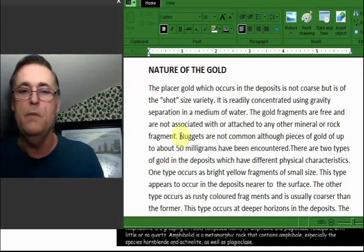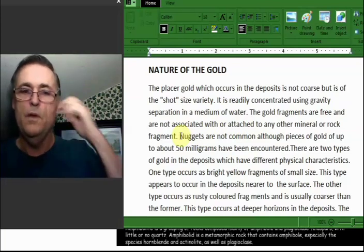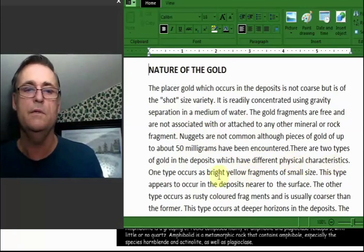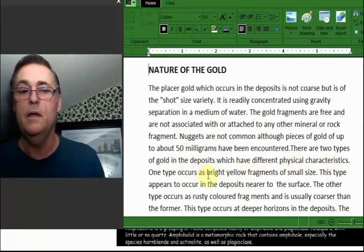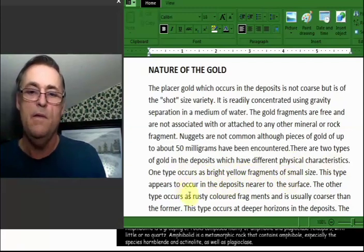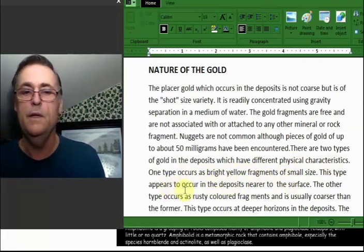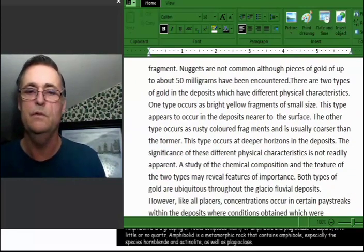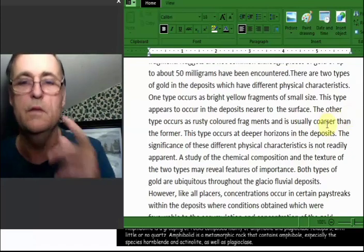Nuggets are not common, although pieces up to about 50 milligrams have been encountered. There are two types of gold in the deposit, which have different physical characteristics. One type occurs as bright yellow fragments of small size. This type appears to occur in deposits near the surface. Now isn't that beautiful? You've got nice shiny gold near the surface. I'll tell you in a bit how near the surface that is. You've got to do some work still.